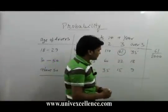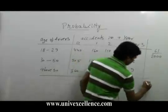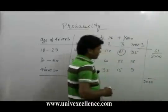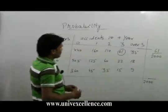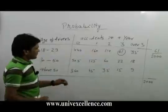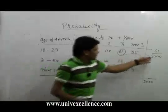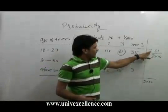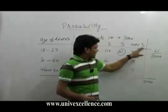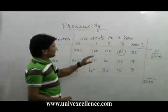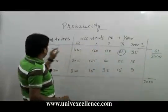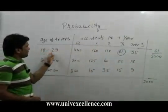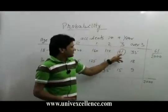All of these numbers would total to 2000. So, 61 upon 2000 shows the probability of age 18 to 29 with exactly 3 accidents.